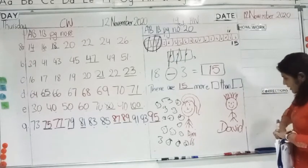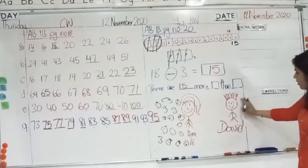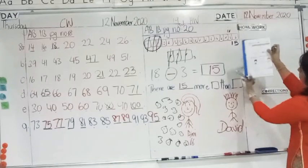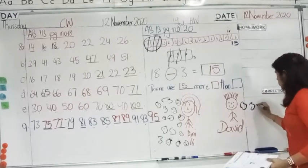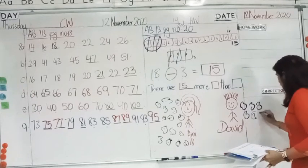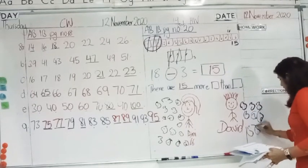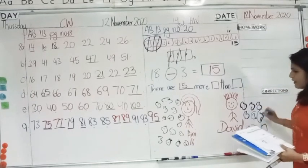Now, David says he has 9 stickers. So, I am going to draw 9 stickers beside David on the right hand side. Here there is space. Draw 9. 1, 2, 3, 4, 5, 6, 7, 8, 9. So, there are 9 stickers.